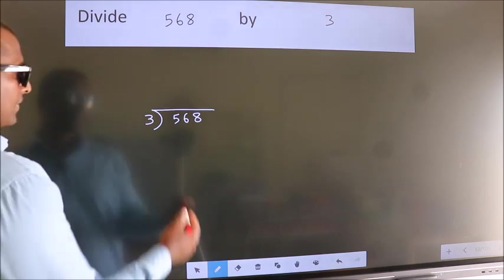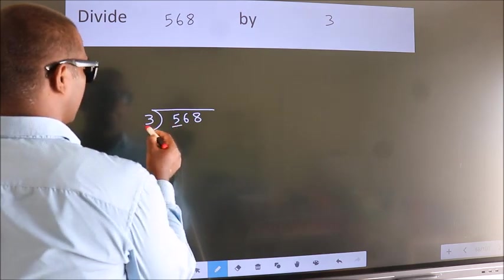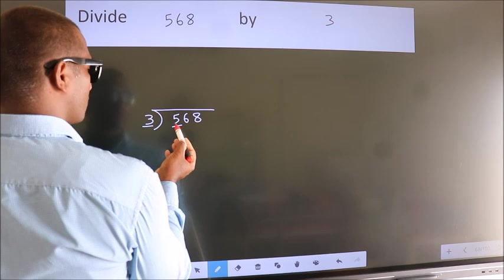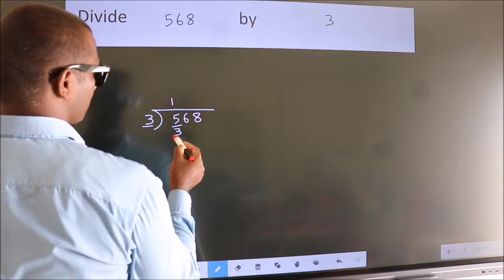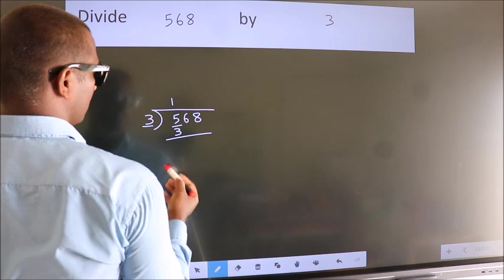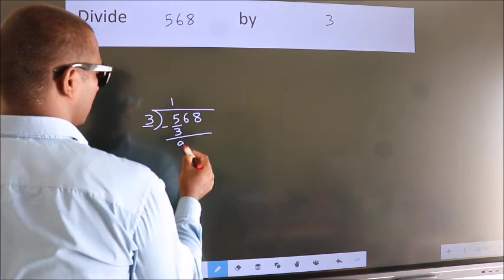Next, here we have 5, here 3. A number close to 5 in the 3 table is 3 once 3. Now we should subtract. We get 2.